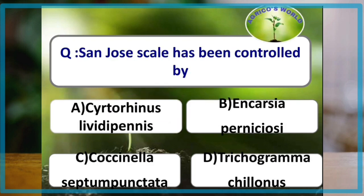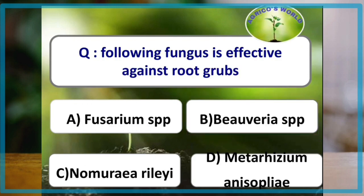San Jose scale has been successfully controlled in India by importation of Encarsia perniciosi. Which of the following fungus is effective against root grub? Metarhizium anisopliae is the fungus which is effective against root grub.